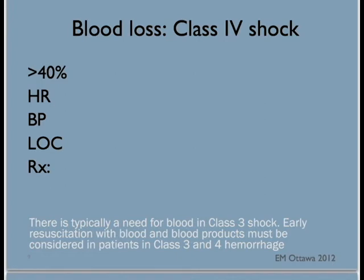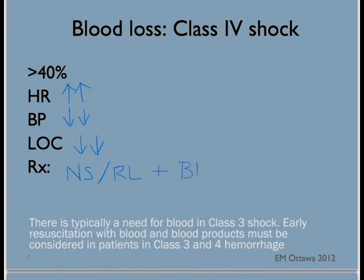When more than 40% of the blood volume is lost, the patient is in class 4 shock. The heart rate will be fast, the blood pressure low, and now the patient would be obtunded instead of merely being confused or agitated. For this patient, crystalloids and blood would also be given until the vital signs and the level of consciousness start to return to normal.